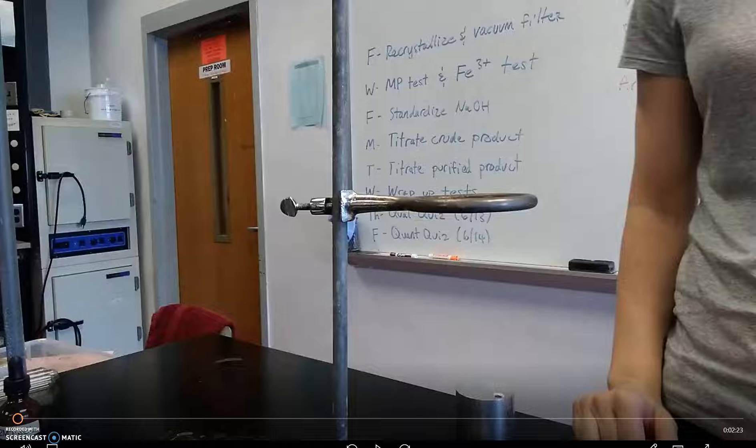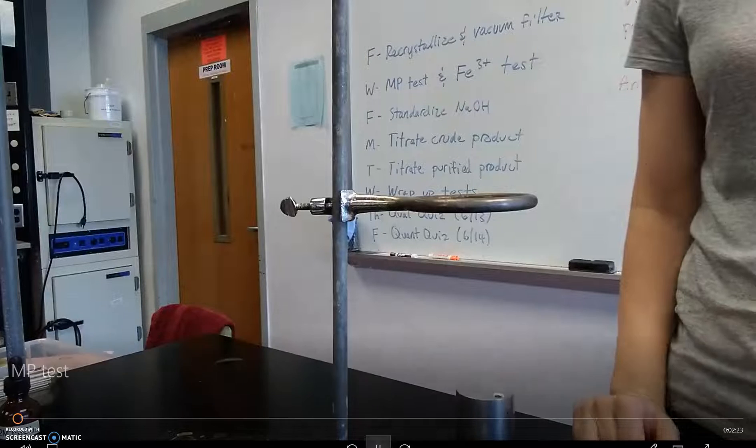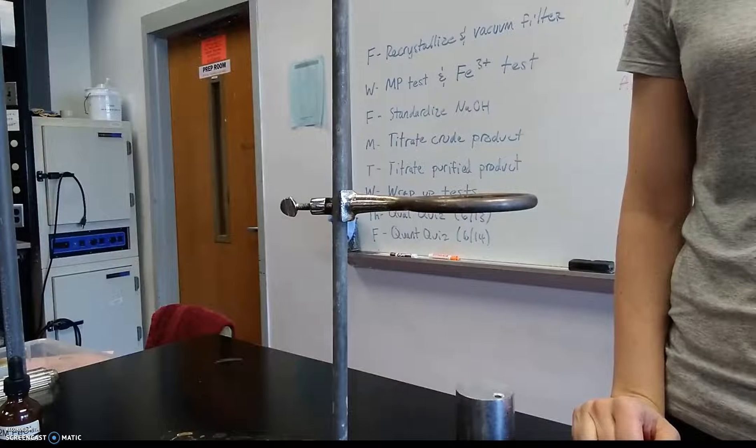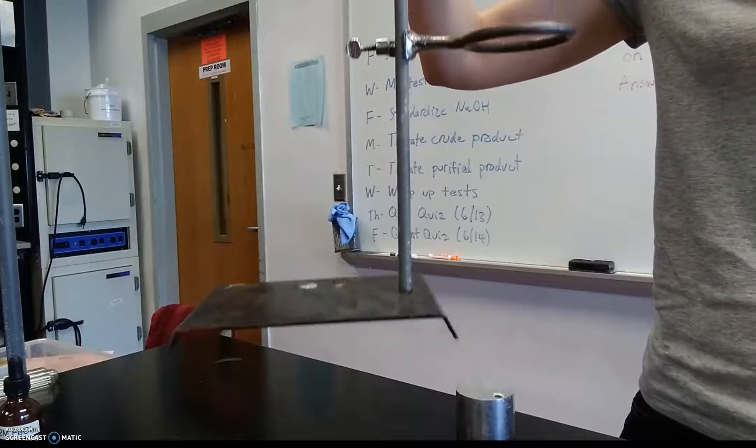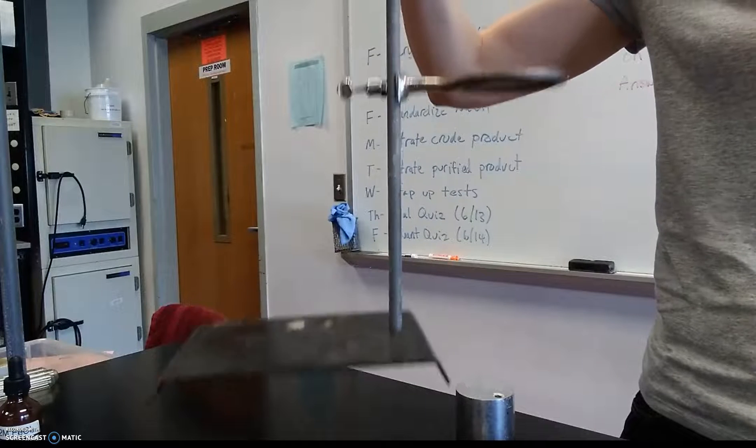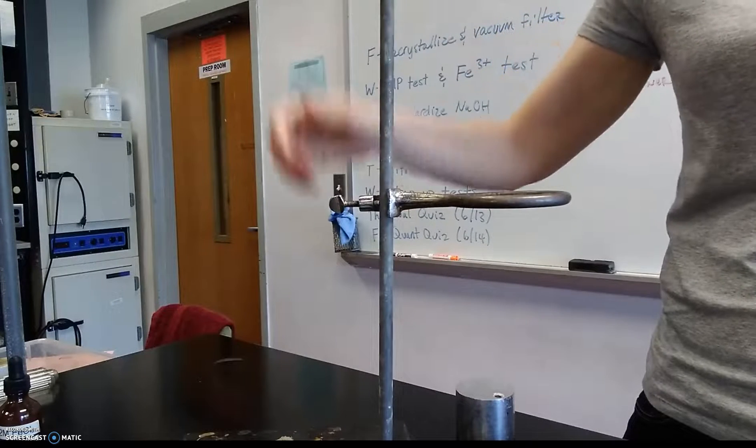In addition to the iron test, we're also going to be performing a melting point analysis test. Due to the fact that acetylsalicylic acid has a melting point of 136 degrees celsius, we can't use a hot water bath so we're going to use a different setup. This is of course a quantitative test as you're going to be measuring numerical data.